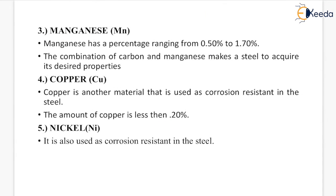The next element is manganese, which has a percentage ranging from 0.5% to 1.7%. The combination of carbon and manganese makes steel acquire its desired properties. Copper is another material used as a corrosion resistant element in steel; the amount of copper is less than 0.20%. Nickel is also used as a corrosion resistant element in steel.